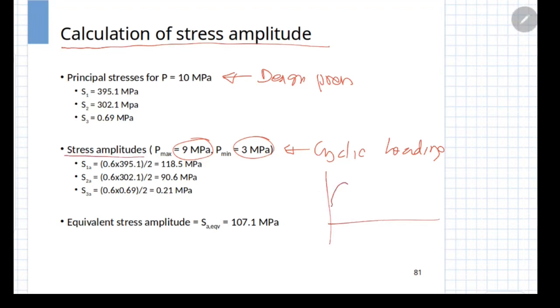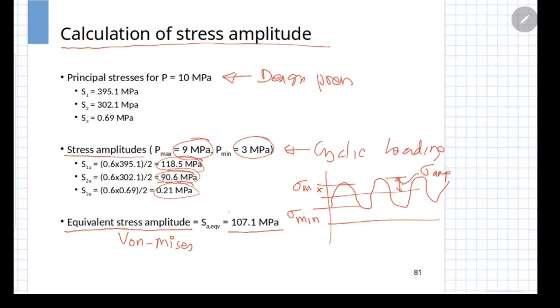You can first calculate what is the variation of stress. That is what has been calculated here for first, second and third principal stress. Using these values, we can calculate the amplitude of equivalent stress, which is the von Mises stress for the ASME Section VIII Division 2 design code. You obtain the equivalent value of stress amplitude corresponding to given load cycle.